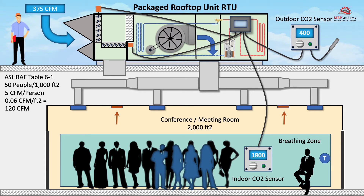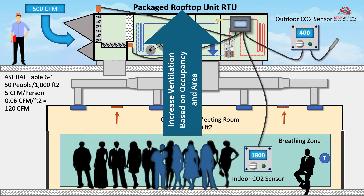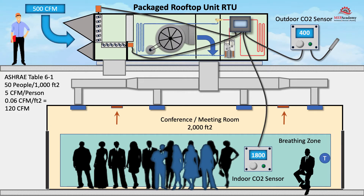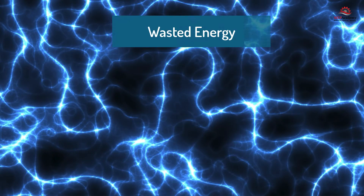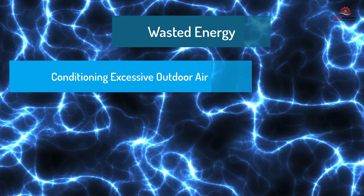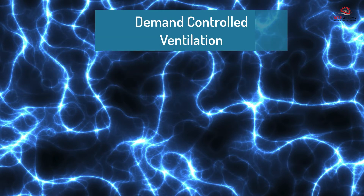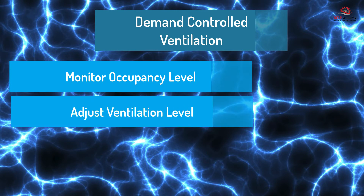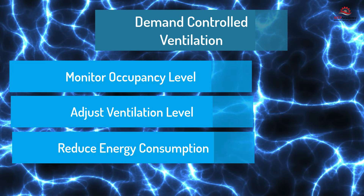With ASHRAE 62.1, the ventilation requirements or outdoor air is increased based on the number of occupants and square footage of the space. Demand controlled ventilation is based on providing outdoor air in proportion to the occupancy level. Energy is wasted in the form of conditioning excessive amounts of ventilation air when the occupancy level is less than the design maximum. By using demand controlled ventilation, the occupancy level can be monitored and the quantity of ventilation air adjusted downward according to actual occupant levels, not the design maximum.